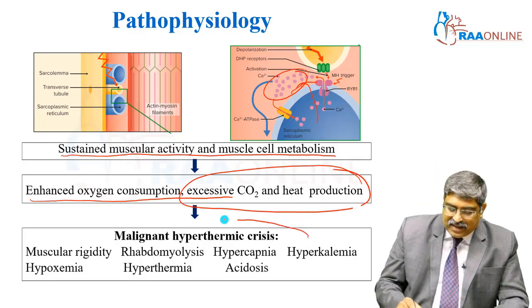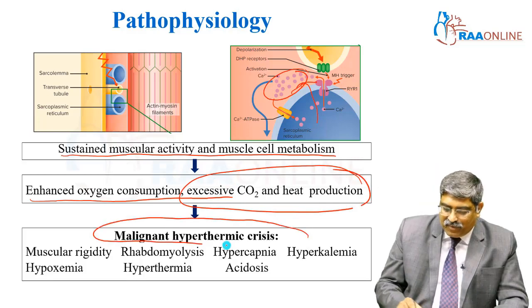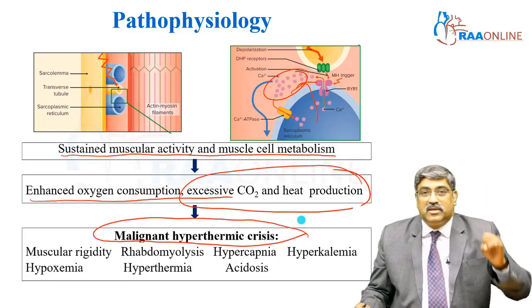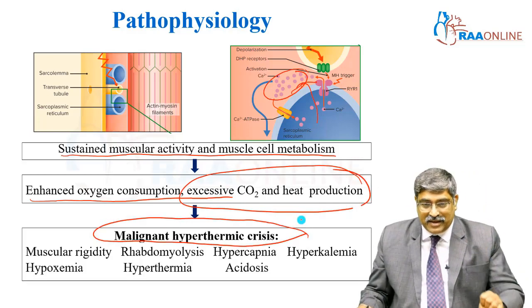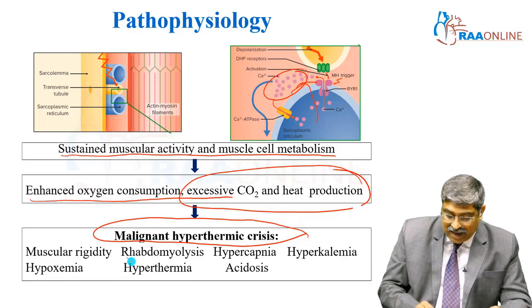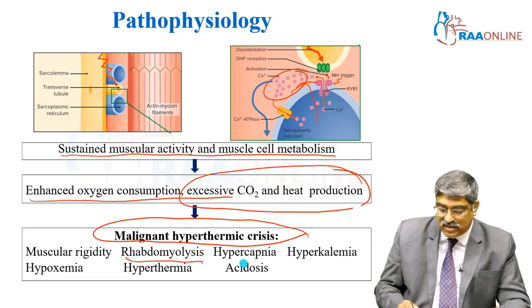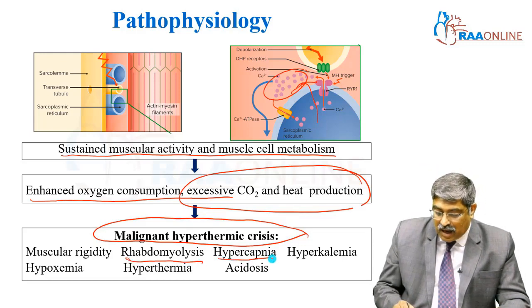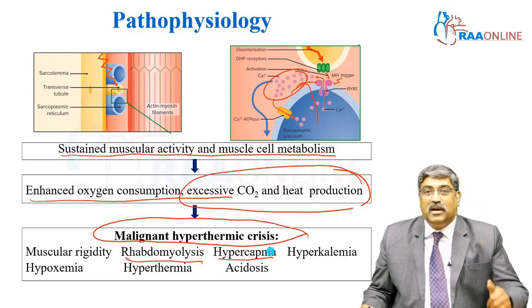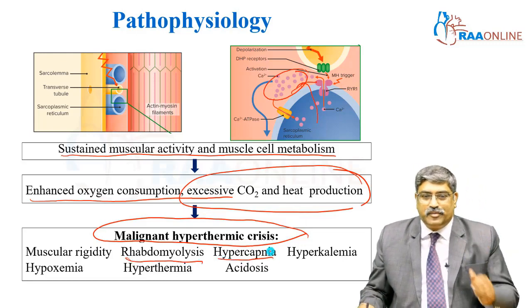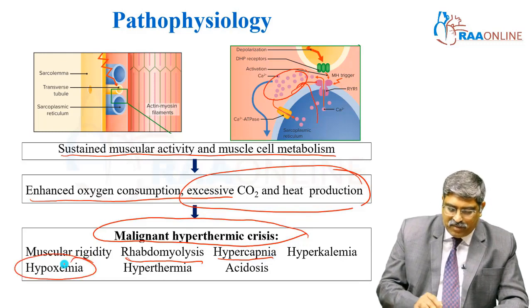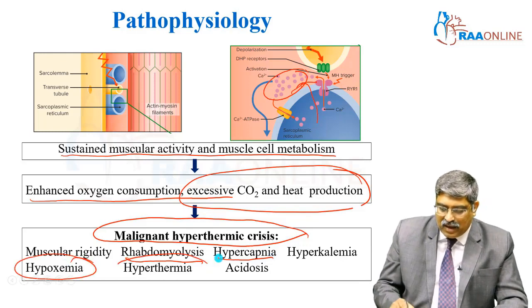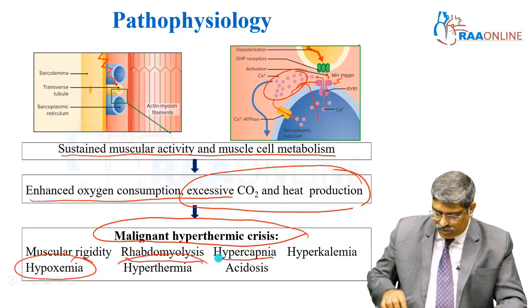Thereby a crisis develops, which includes extensive muscle rigidity, rhabdomyolysis, hypercapnia, increased potassium, hypoxemia, hyperthermia, and acidosis.